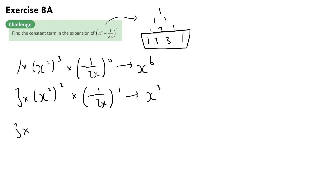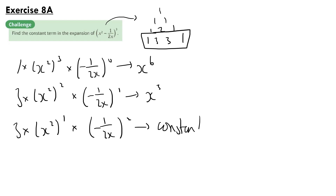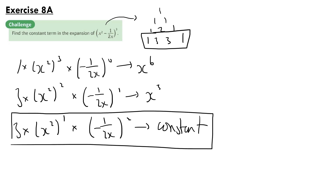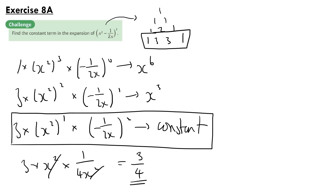Our next term will be 3 times x squared to the power of 1 times minus 1 over 2x squared. And this will give us a constant with no x part, and this is the term we're looking for. So we get 3 times x squared times minus 1 over 2x squared, so that's positive 1 over 4x squared. The x squared will cancel and we get our constant term as 3 over 4. And that is our answer.